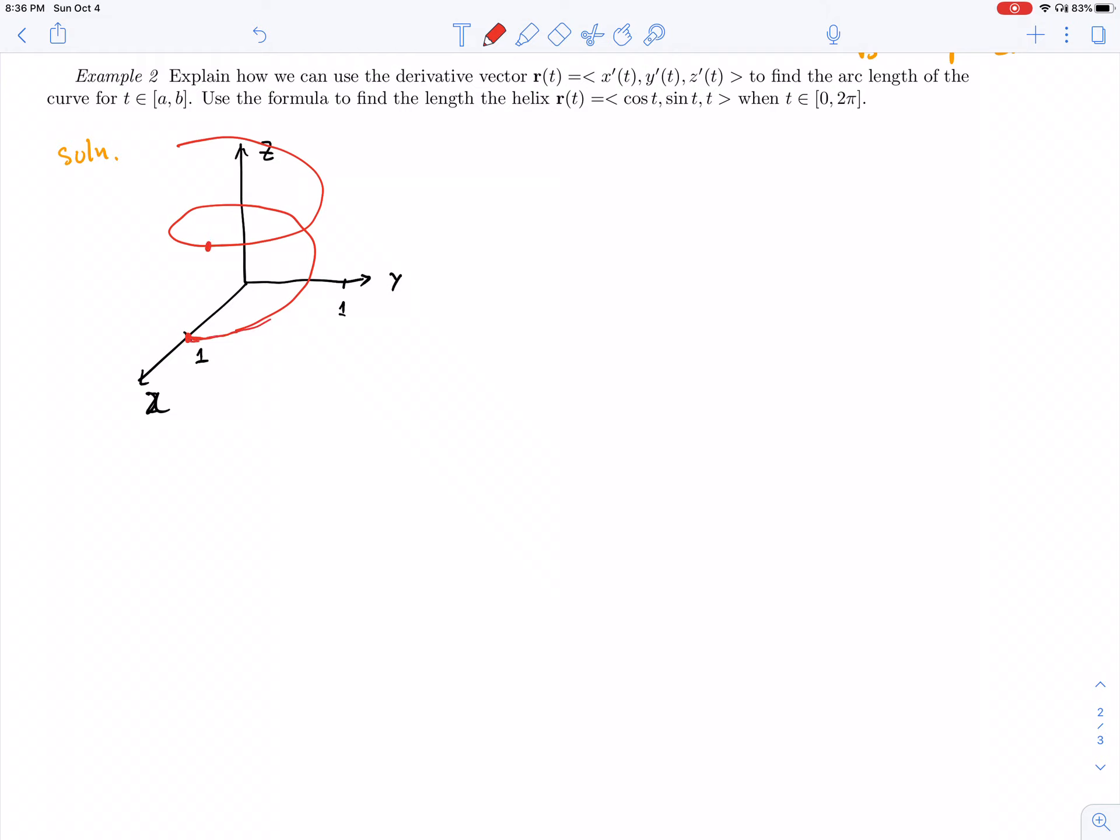This time we're going to try to find the arc length when T is between 0 and 2π. That means we're going to find essentially one round, one segment of a slinky. When you circle around, you get 2π. If we look from the top, this is a circle.